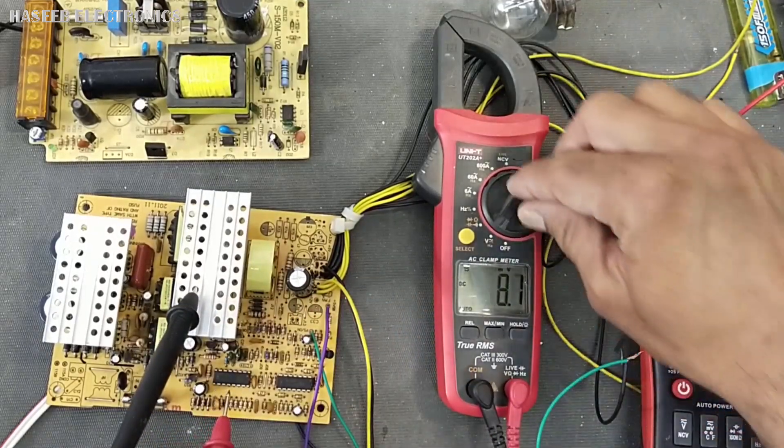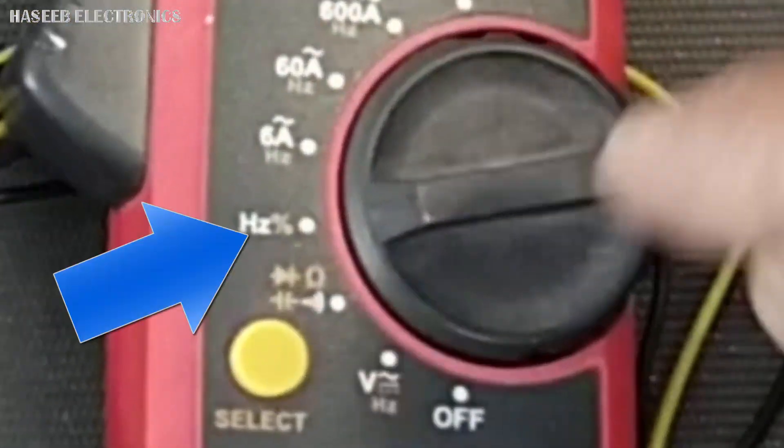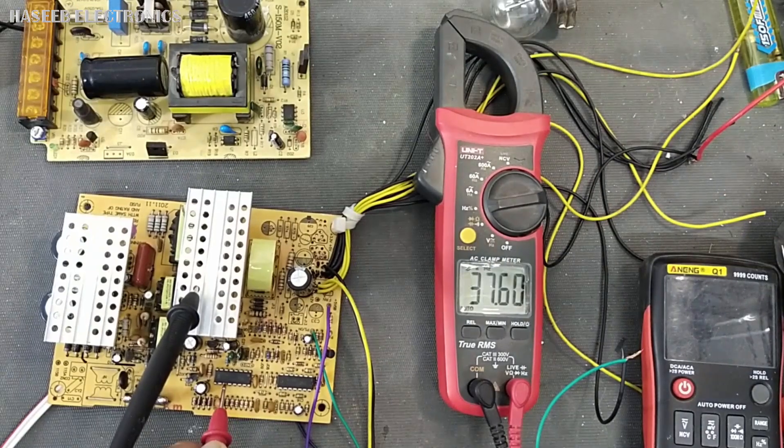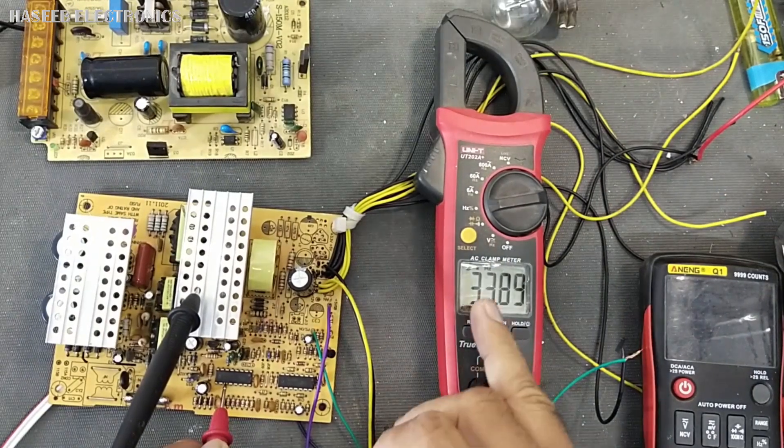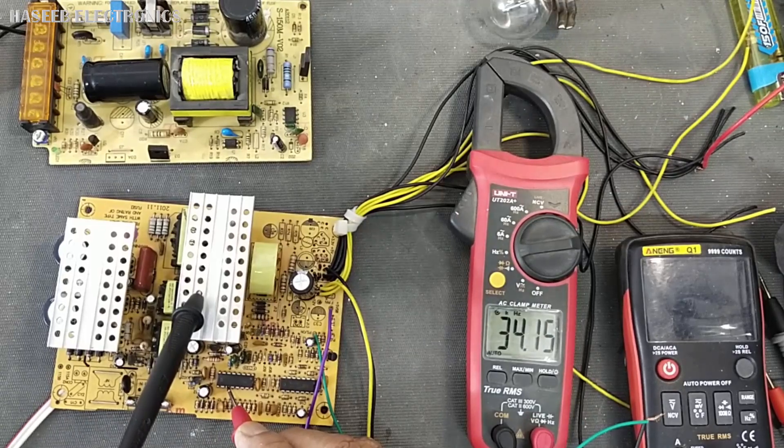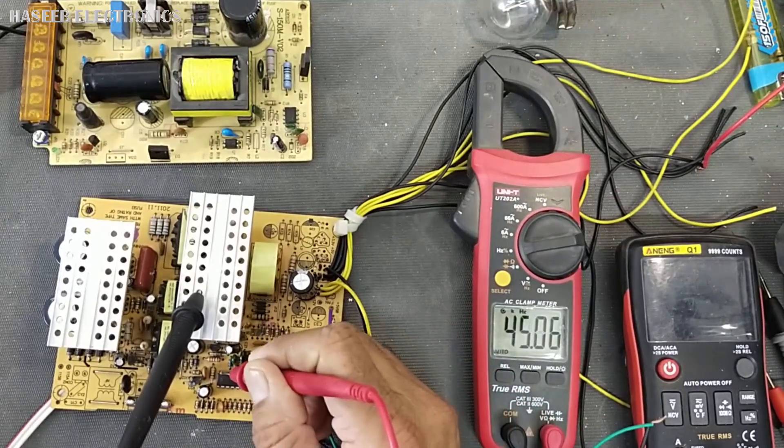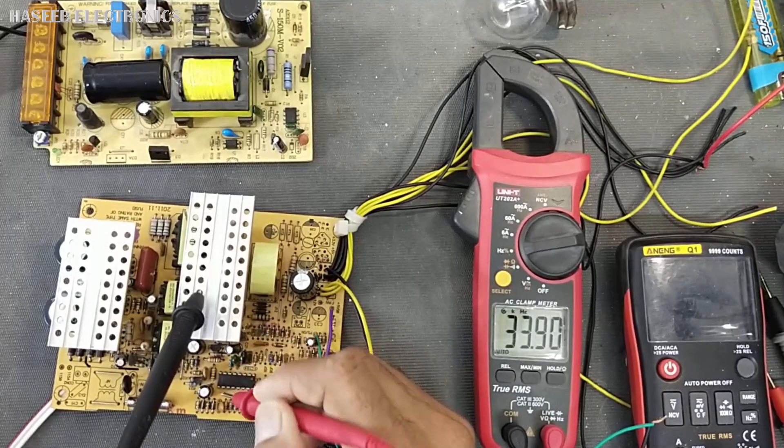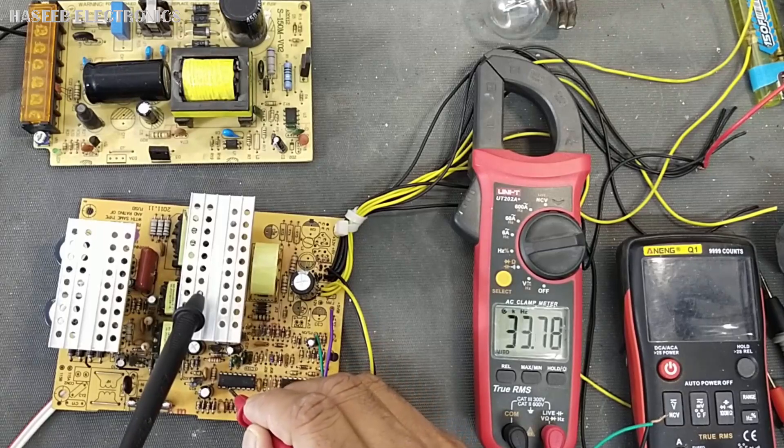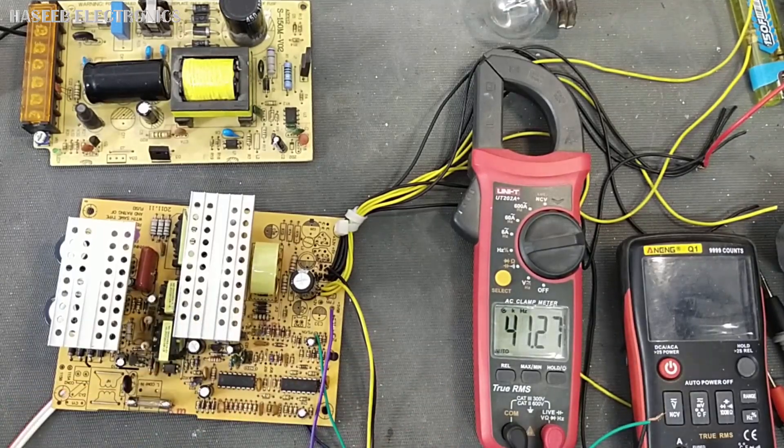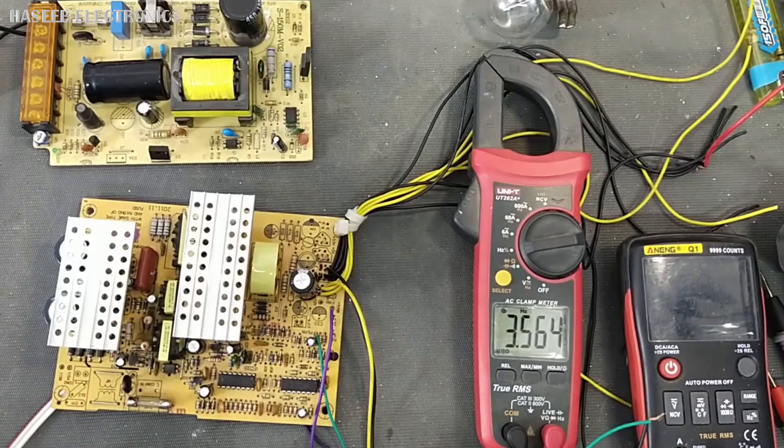So we will check drive signal at pin number 11. It is 34 kilohertz. Pin number 11 that is 34 kilohertz and pin number 8, 34 kilohertz. So it is switching at 34 kilohertz. So in this way we can verify the frequency of any IC.